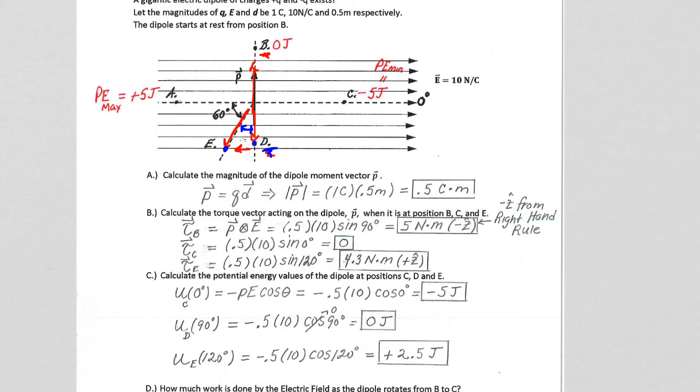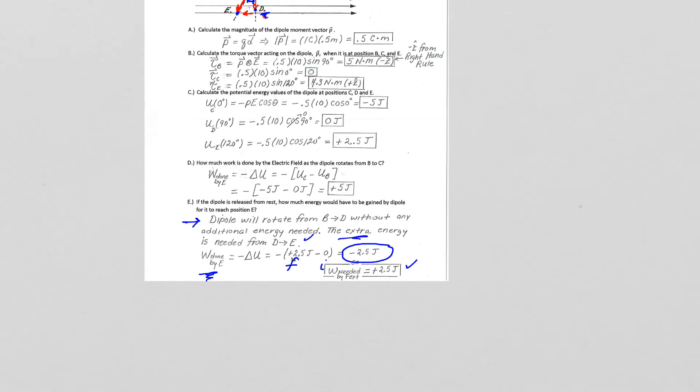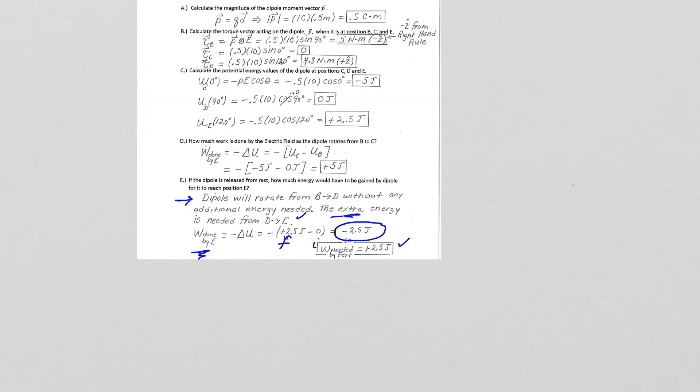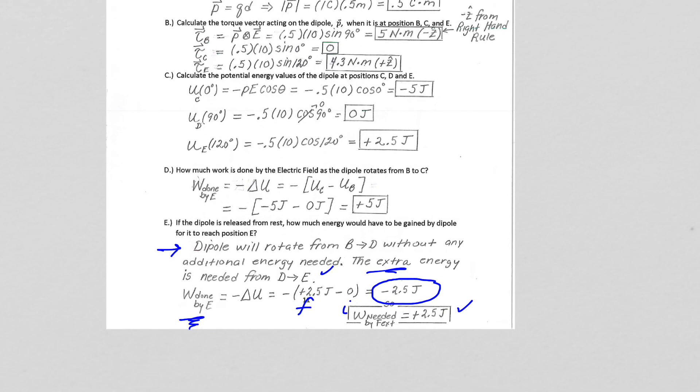Now the field is going to slow it down, do negative work, bring it to a stop at this point. And that is how we get our work needed by us to flick it versus the work done by the field.